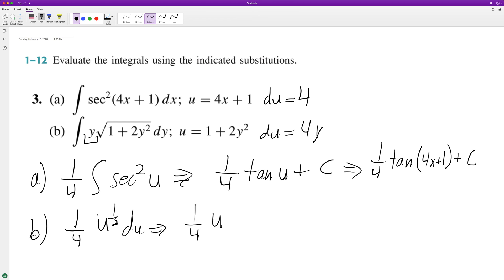Add one to it, so three halves, and then divide through by three halves, so it ends up being equal to multiplying times two thirds, which is equal to one sixth u raised to three halves.